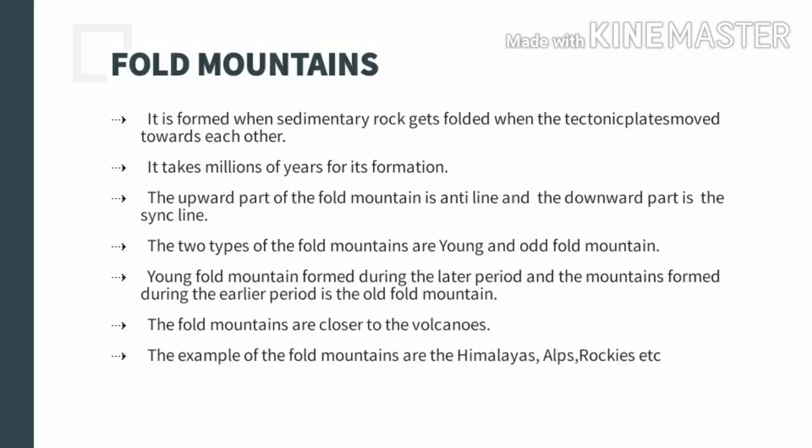We are going to deal with the fold mountain. So what exactly is the fold mountain? It is formed when sedimentary rocks get folded when the tectonic plates move towards each other. So fold mountain is formed in the sedimentary layer, and it takes millions of years for its formation. When the tectonic plates start to move in a horizontal direction towards each other, the wrinkling of the crust of the earth takes place.